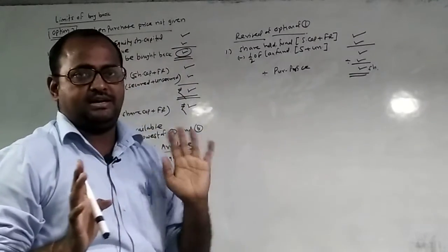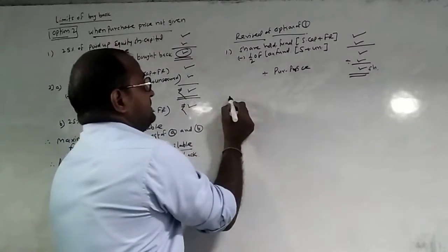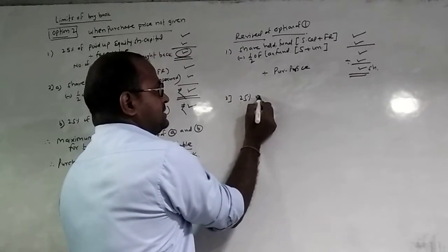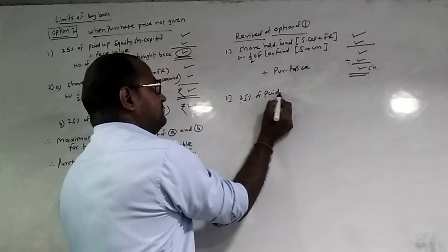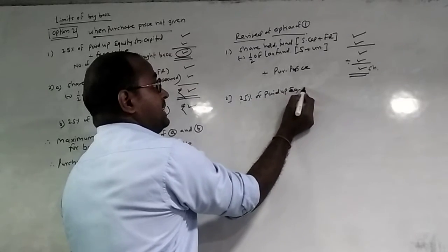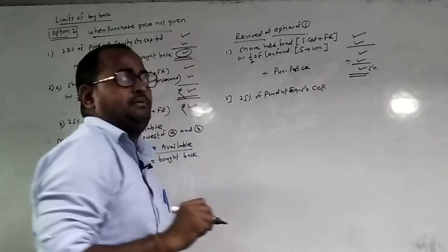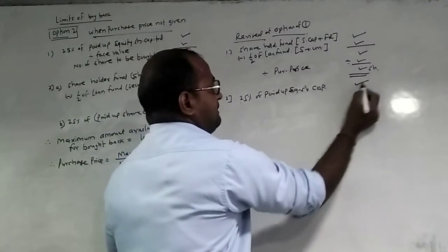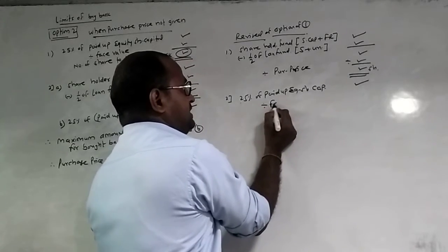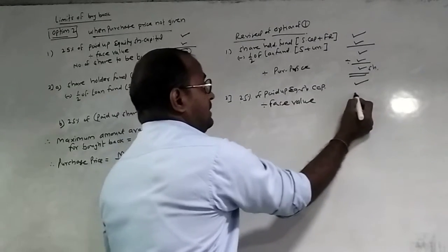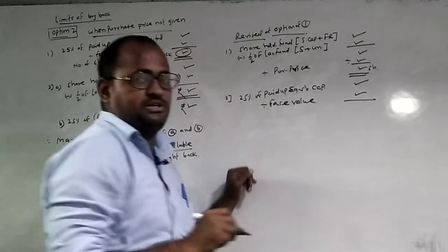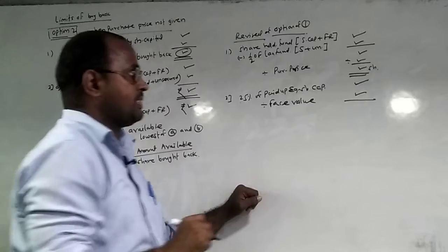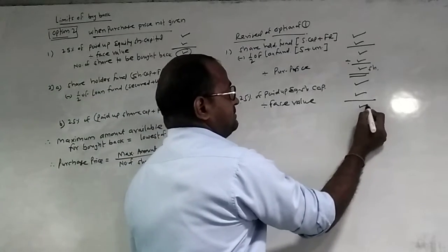So we will get the number of shares. Second: what is the number of shares? 25% of paid-up equity share capital. We will get the number of shares, and divide by the face value. This gives us the number of shares.